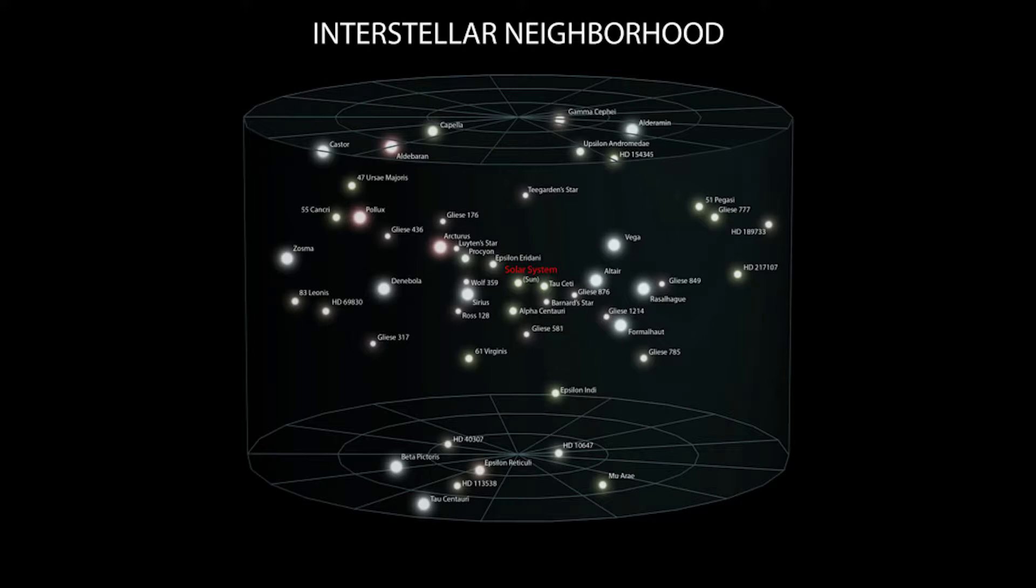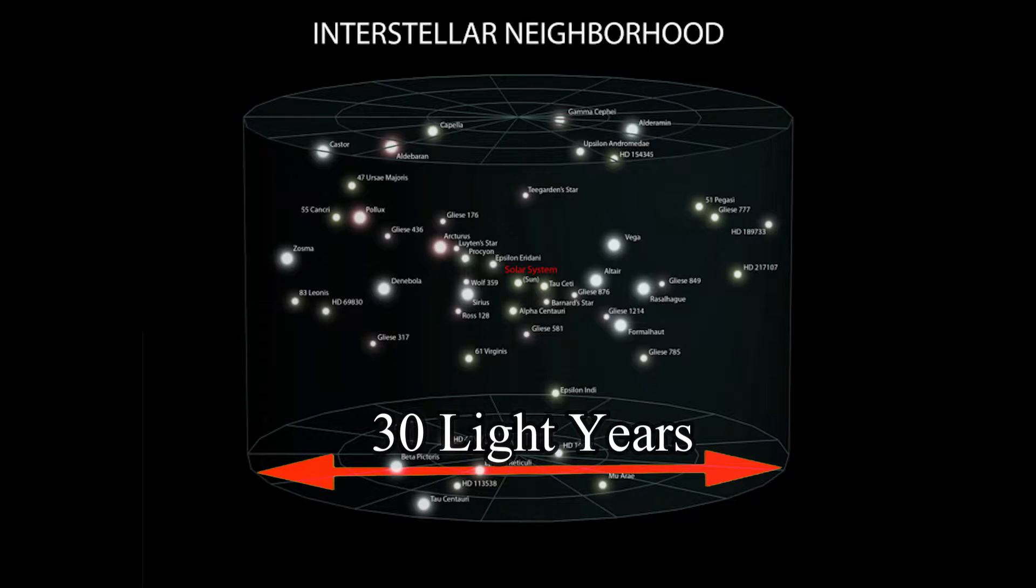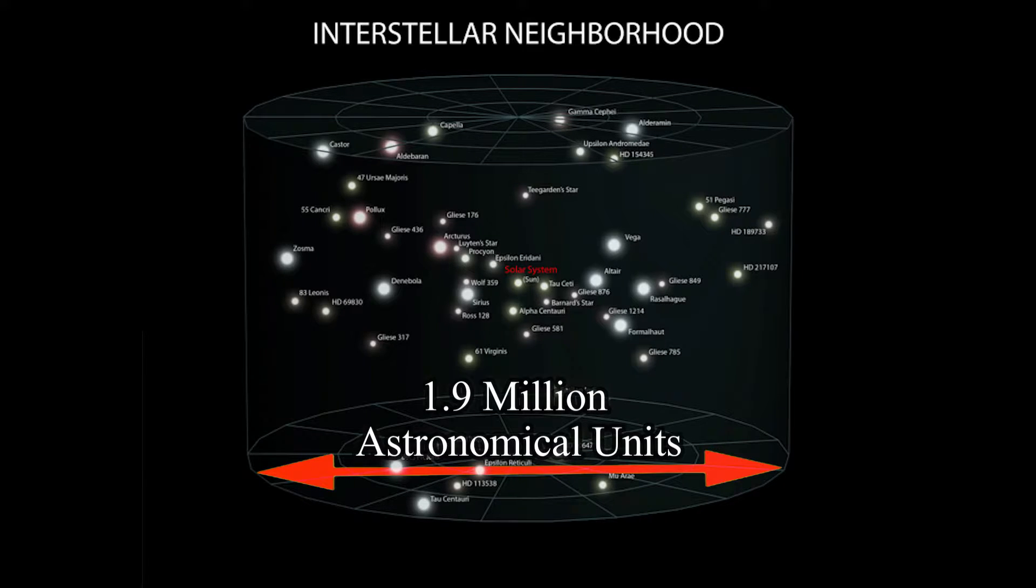Looking out even further than the Kuiper belt, we now reach the interstellar neighborhood, which is 30 light years across, or approximately 1.9 million astronomical units.